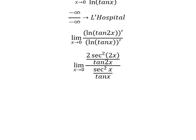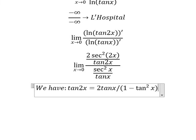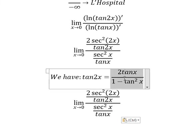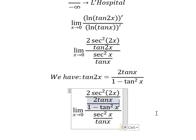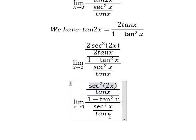Next we have the formula tan 2x equals 2 tan x over 1 minus tan squared x. So I will put this one in here. We simplify the 2's and the tan x terms.